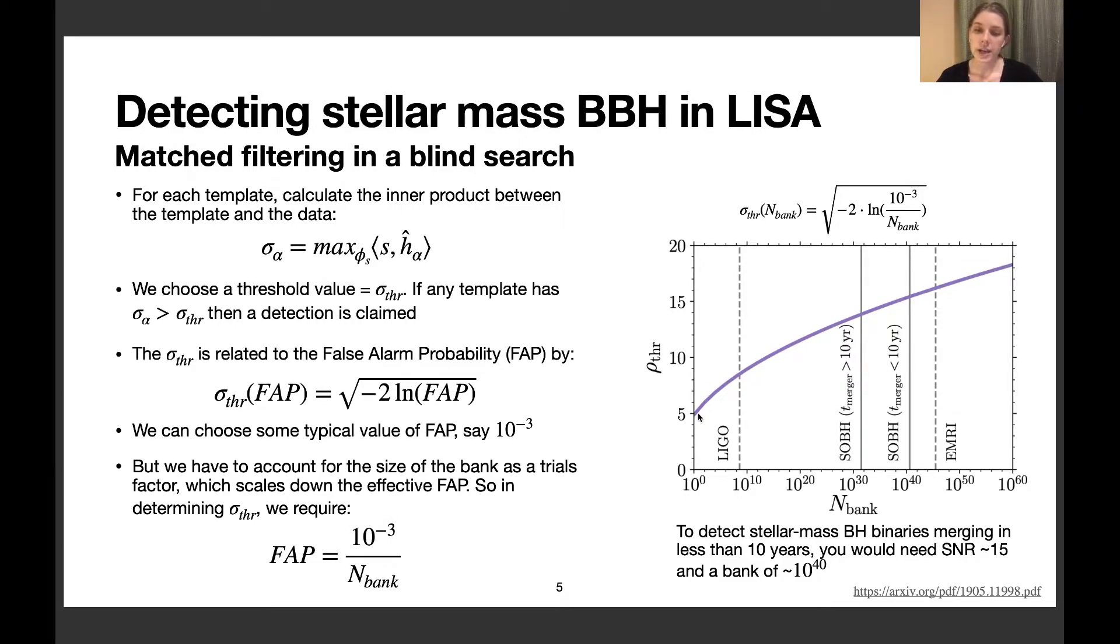Then we can plug that into this relationship to get the σ thresholds where we can claim detections. Doing this shows that for stellar mass binary black holes in LISA, we would need a template bank of around 10^40 templates to claim a detection in a blind matched filter search, which is obviously way too big to be computationally feasible.